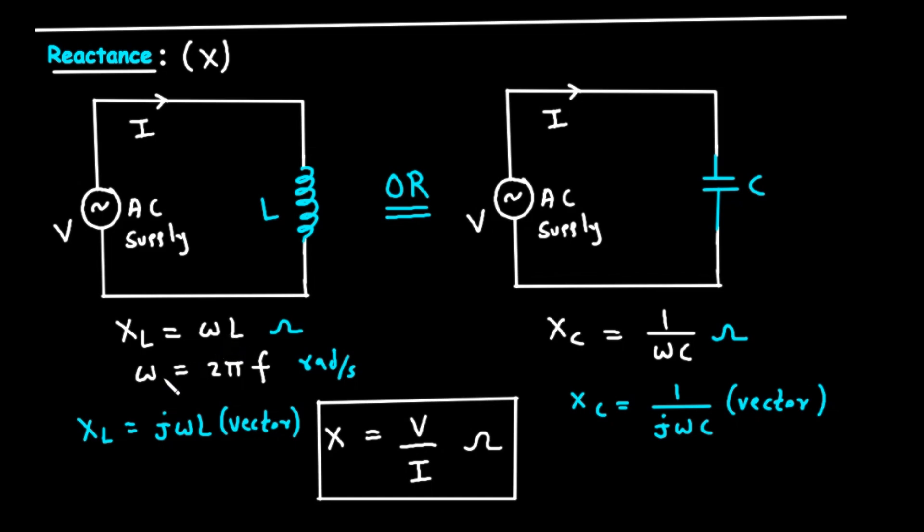The symbol omega is the angular frequency of the AC supply. It tells us how fast the current is oscillating, and it's measured in radians per second. Angular frequency, omega, is directly related to the standard frequency, F, which is measured in Hertz. The relationship is omega equals 2 times pi times F.